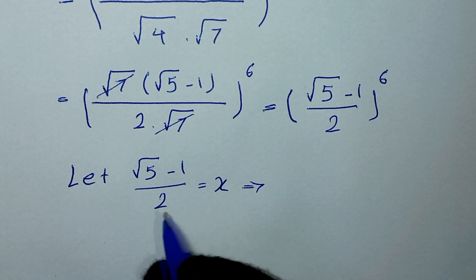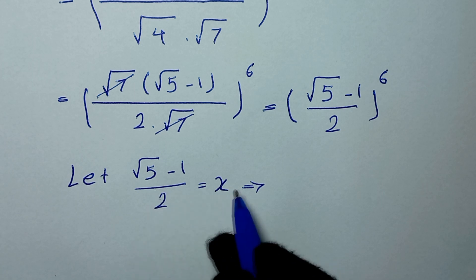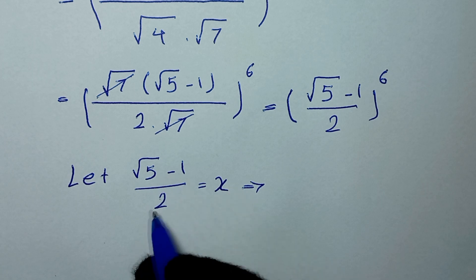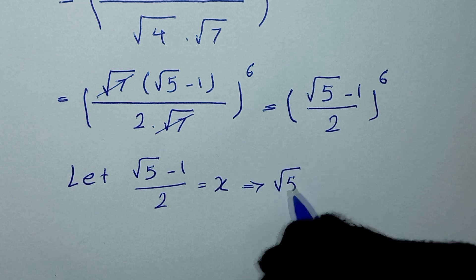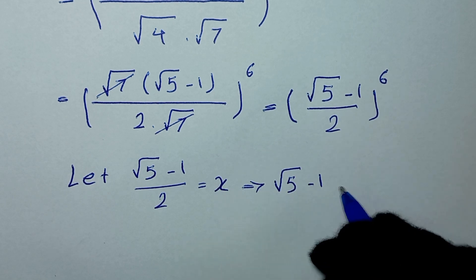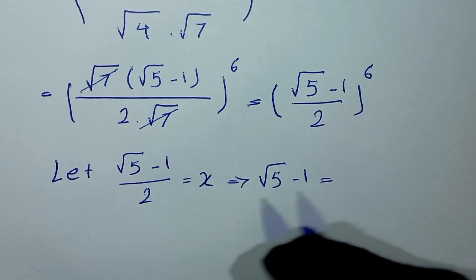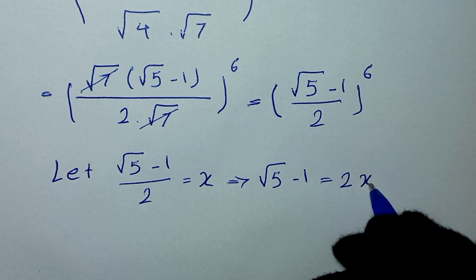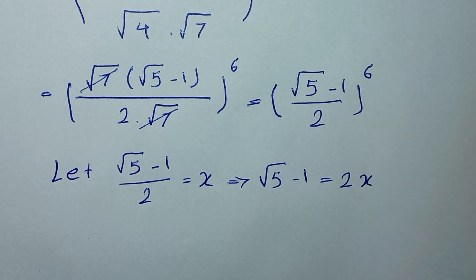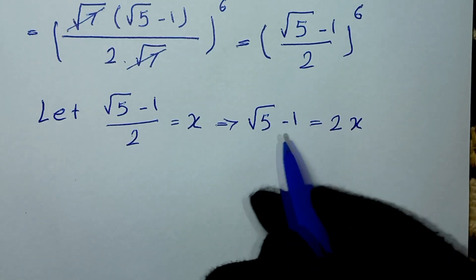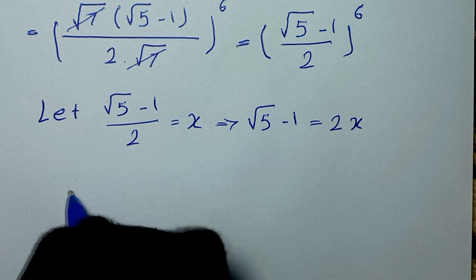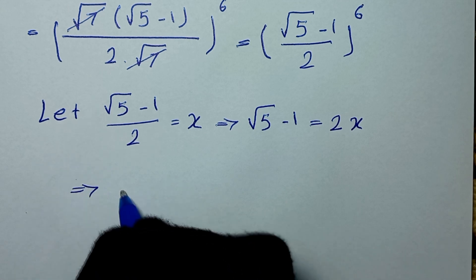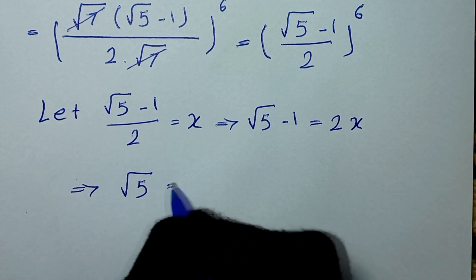We multiply both sides of this equation by 2, so 2x equals square root of 5 minus 1. In the next step, we take this term to the other side, so square root of 5 equals 2x plus 1.